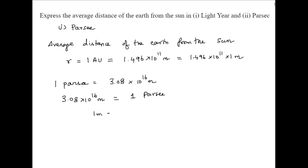One meter is equal to 1 divided by 3.08 × 10¹⁶ parsecs. Now we substitute this into the equation for r.